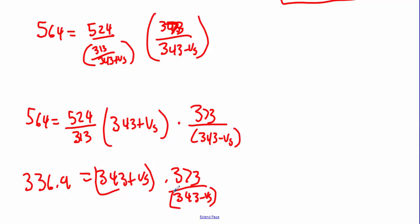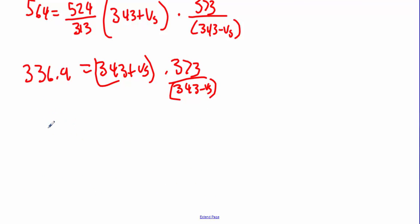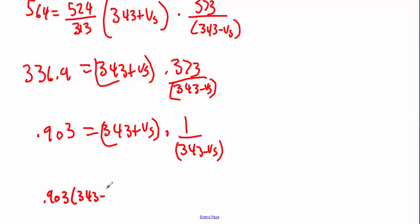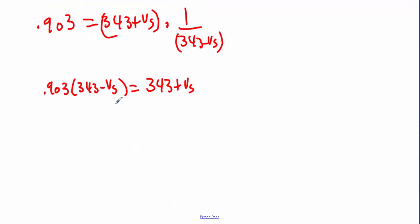I'm going to divide both sides by 373 and I get 0.903 equals 343 plus v_s times 1 over 343 minus v_s. Now I'm just going to multiply this quantity over, so I have 0.903 times 343 minus v_s equals 343 plus v_s. And so now I can distribute that through, so times 343 equals 309.79 minus 0.903v_s equals 343 plus v_s.